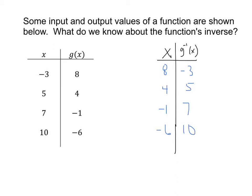We can also write this in function notation. The first ordered pair, negative 3 and 8, means that g of negative 3 is equal to 8 — when you input negative 3, you get an output of 8. What does that mean for the inverse? It just means the same thing backwards: g inverse of 8 would get me to negative 3. When we input positive 8 into our inverse, we get negative 3.